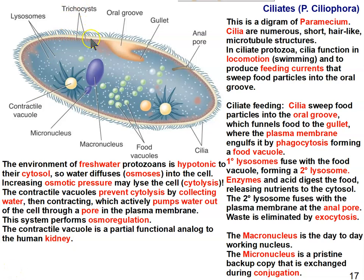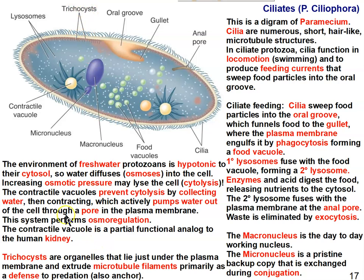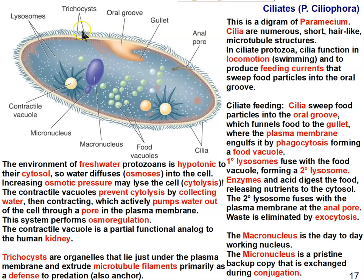Trichocysts are mostly for defense — they're like little harpoons that shoot out from the plasma membrane if a predator comes along and tries to eat the paramecium, deterring predation. Another function is in anchoring; sometimes paramecium will use trichocysts to anchor itself in a feeding position, to stay in one place and set up food currents. When you look at the preserved specimens in the lab, a lot of the hairiness you see on the paramecia are trichocysts that fired during preservation — they shot out trying to defend themselves.